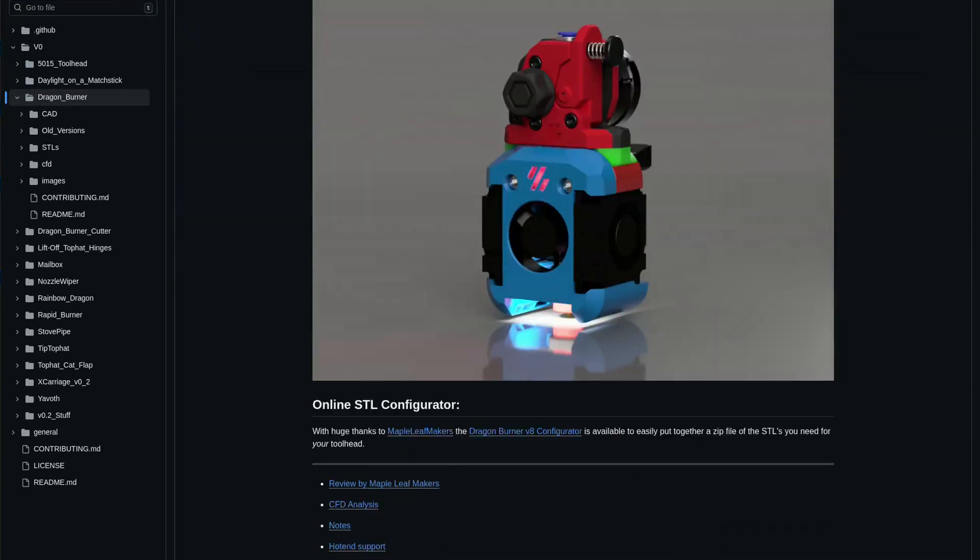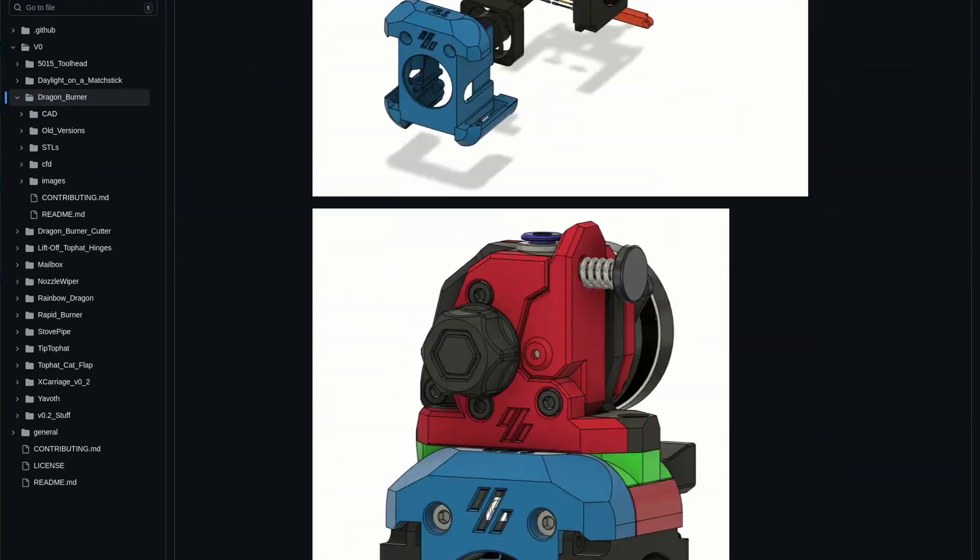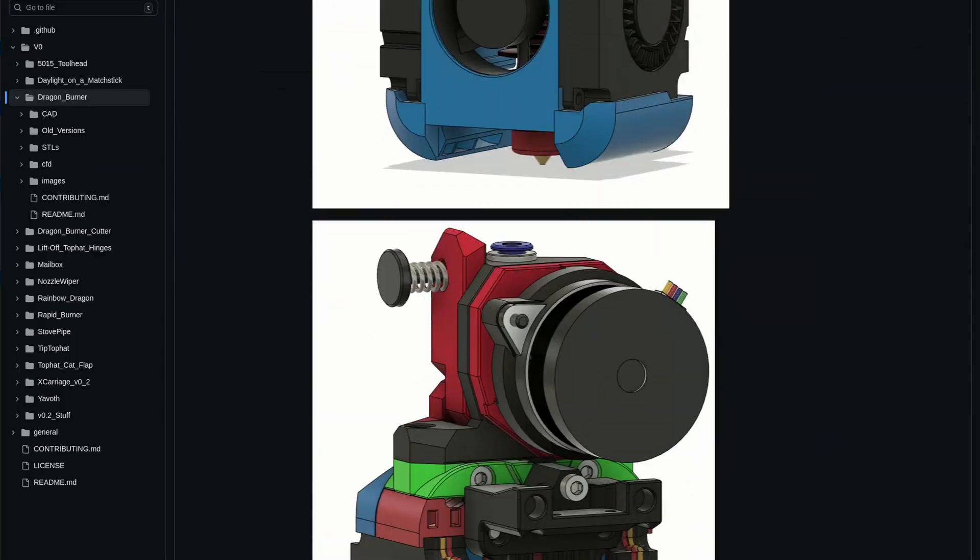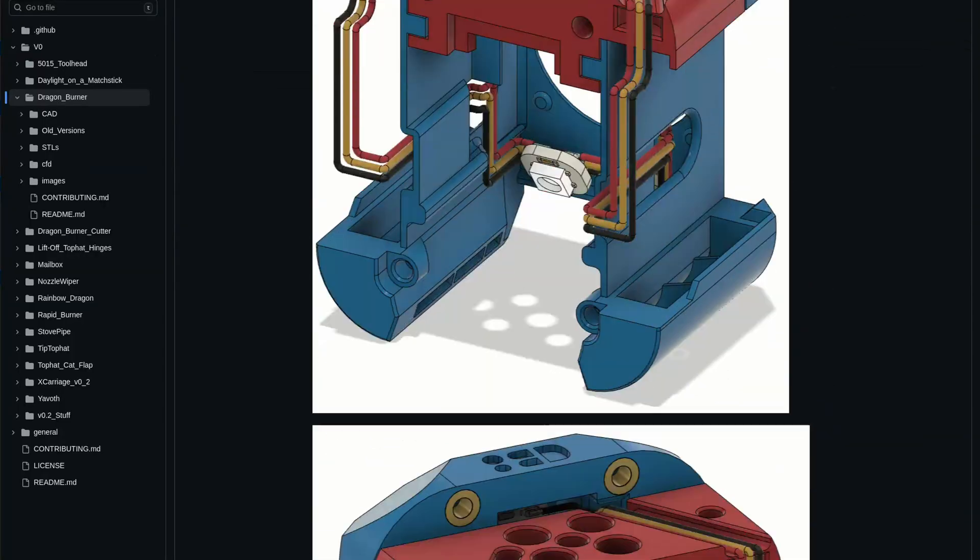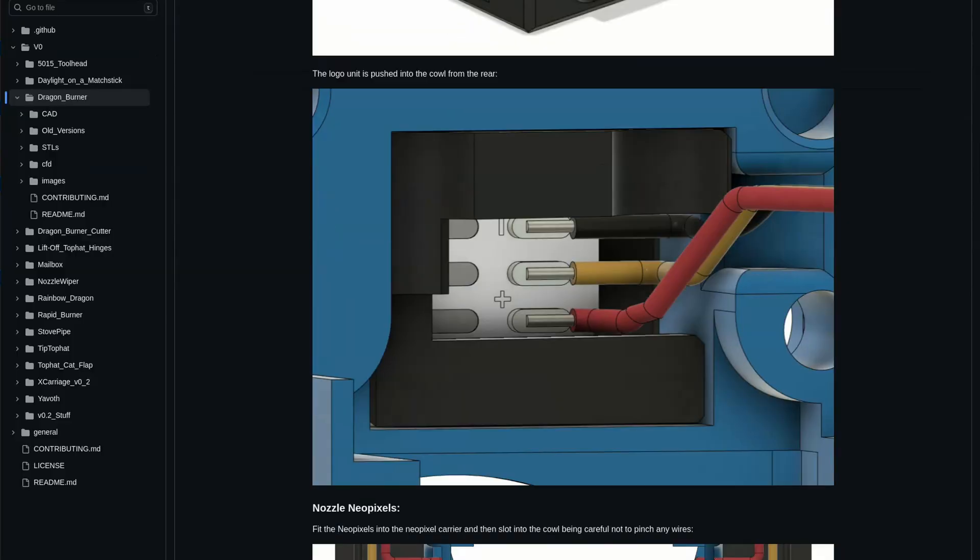Lastly, we add the spring-loaded thumb screw for tensioning. If you're looking to build something a bit higher performance than the stock setup, you can switch this out with one of the toolhead mods like the Dragon Burner that lets you attach a planetary gearbox extruder to deliver higher torque and use bigger fans.